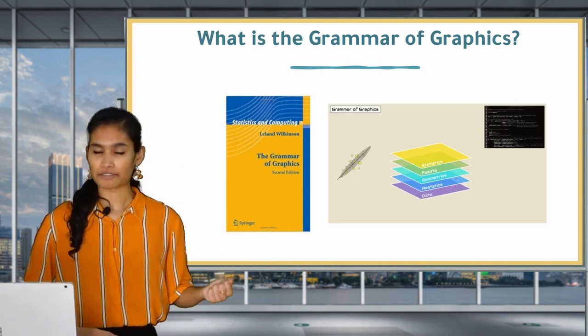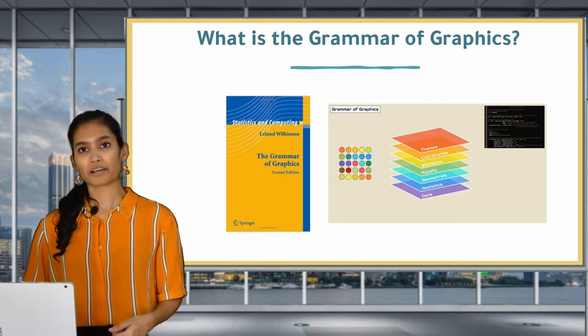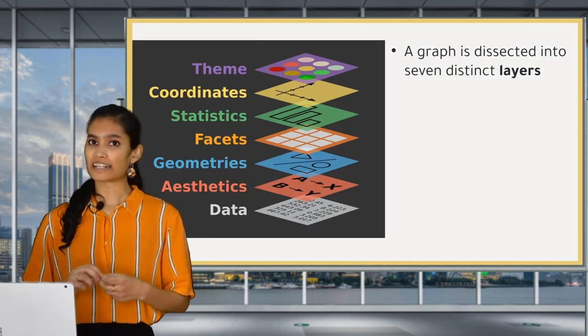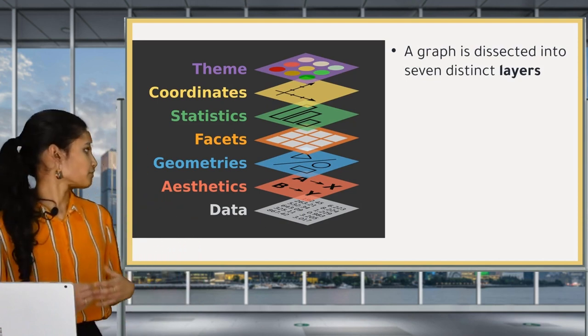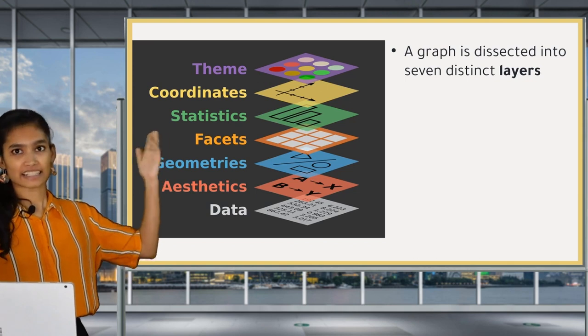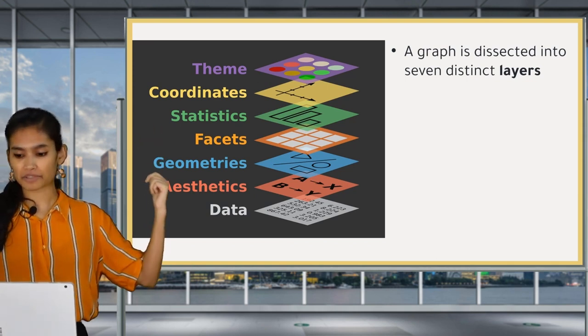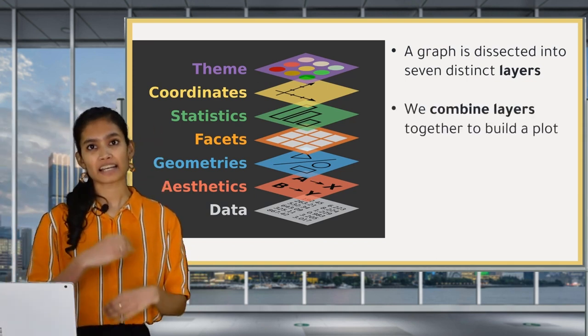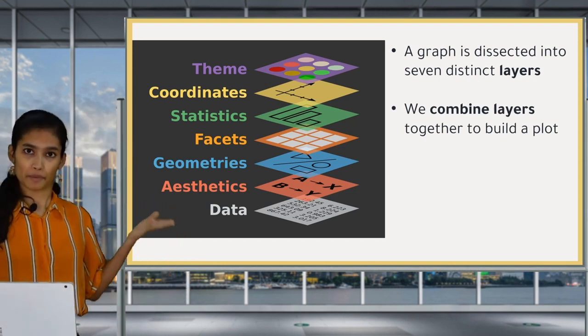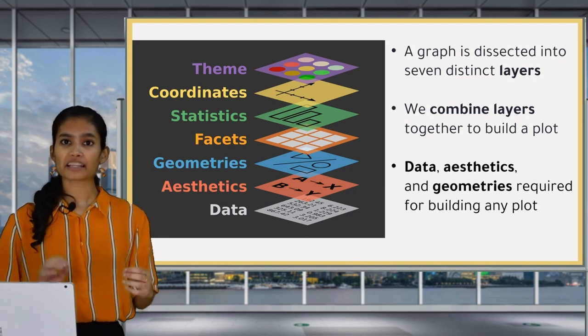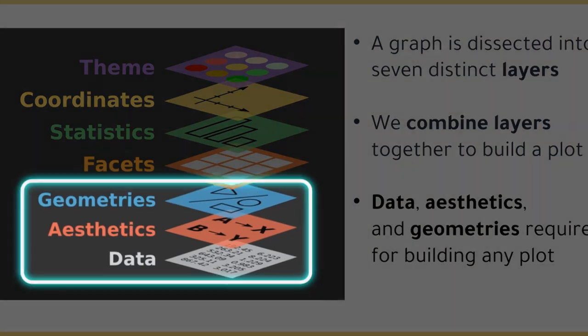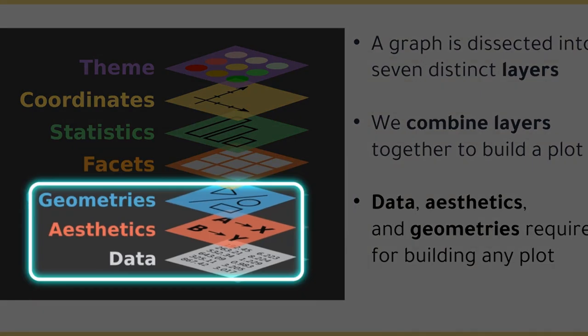Similarly to linguistic grammar, the grammar of graphics defines a set of rules for building graphics and it divides them into separate components called layers. These are the seven grammar of graphics layers. The grammar of graphics or gg layers have specific names that you'll see throughout the course: Data, aesthetics, geometries, facets, statistics, coordinates, and themes. We take these different layers and combine them in order to build a plot and we go in order from the bottom up.